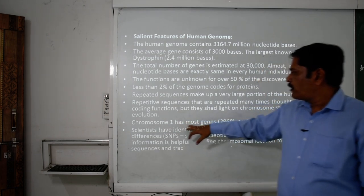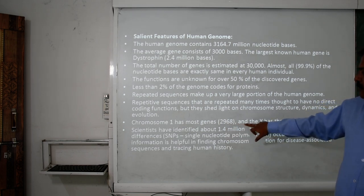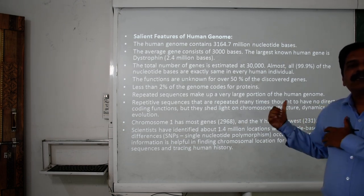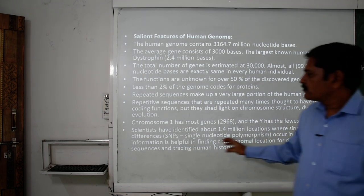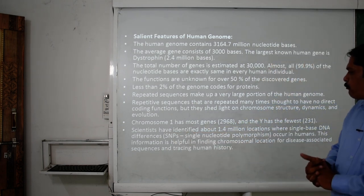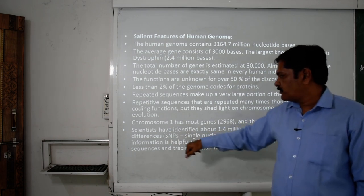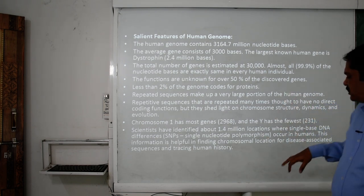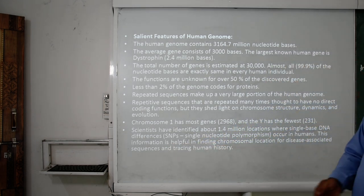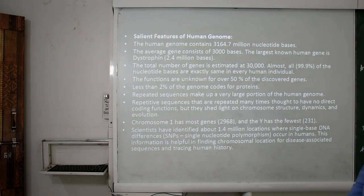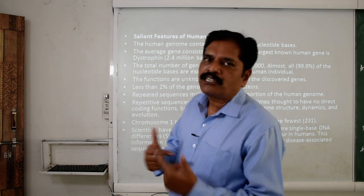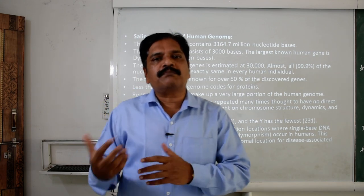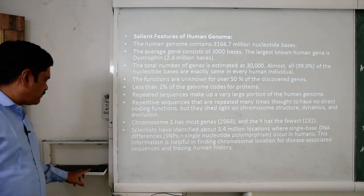Repetitive sequences, though not responsible for coding or protein formation, are important for chromosome structure, dynamics, and evolution. Chromosome 1 has the most genes — nearly 2968 — while the Y chromosome has the fewest, at 231 genes. Scientists have identified about 1.4 million locations where single-base DNA differences occur, called SNPs (Single Nucleotide Polymorphisms), which help in finding chromosomal locations for disease-associated sequences and tracing human history.